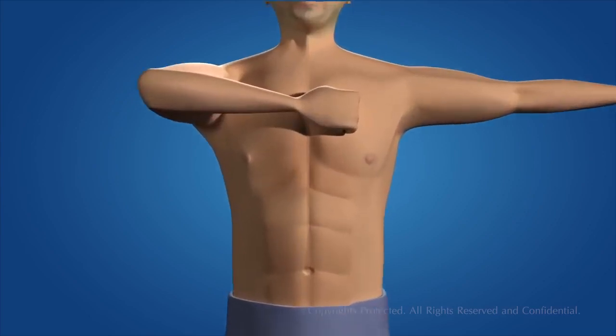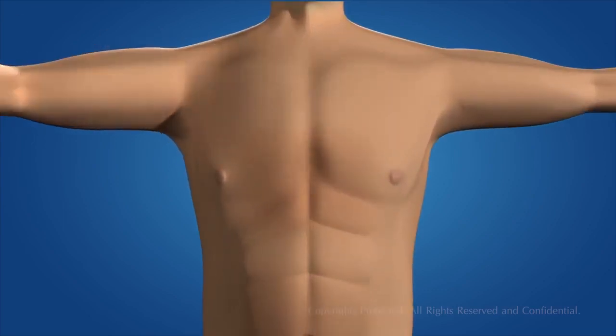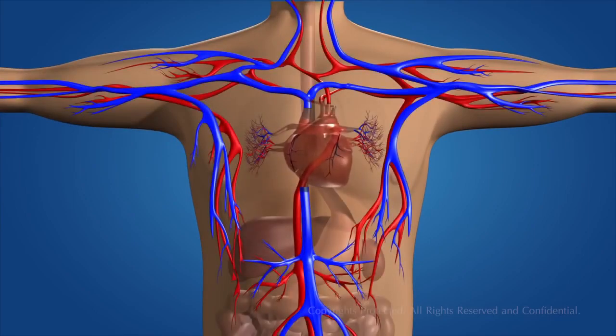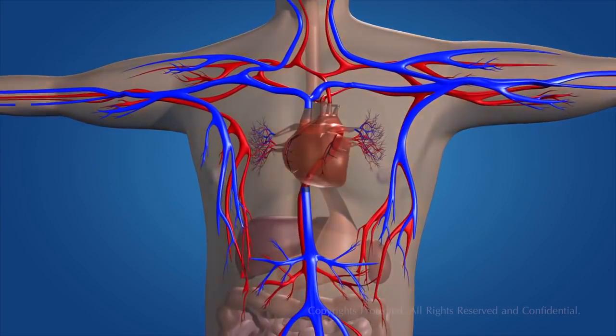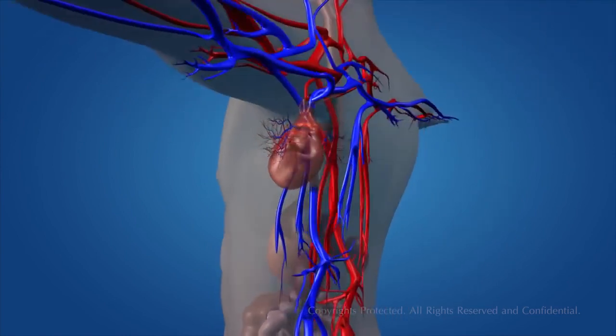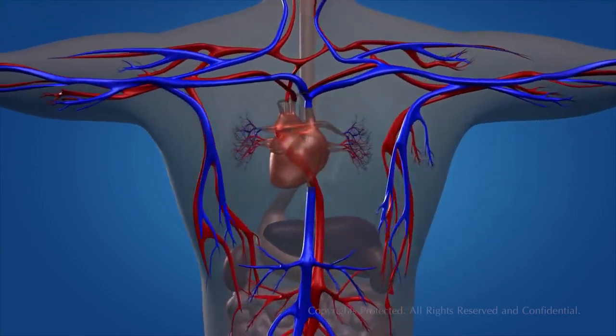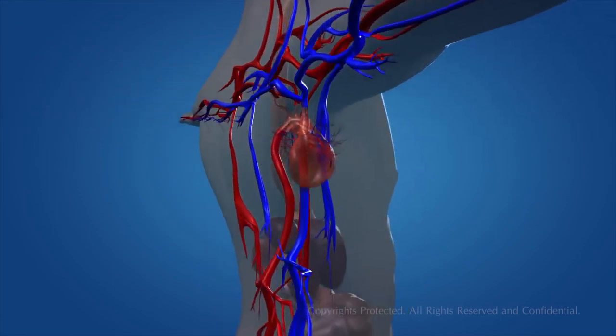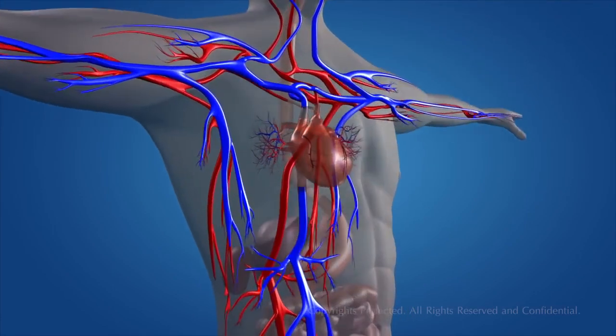Every day your heart beats about one hundred thousand times, sending two thousand gallons of blood surging through your body. Although it's no bigger than your fist, your heart has the mighty job of keeping the blood flowing through 60,000 miles of blood vessels that feed your organs and tissues.